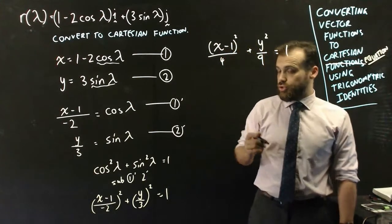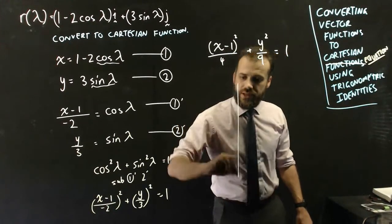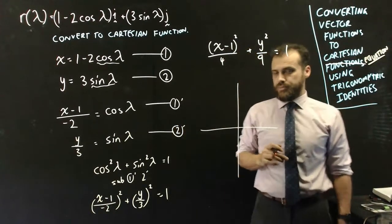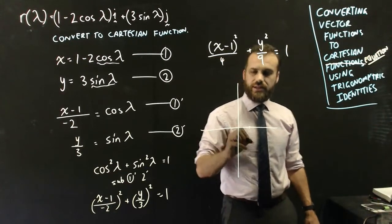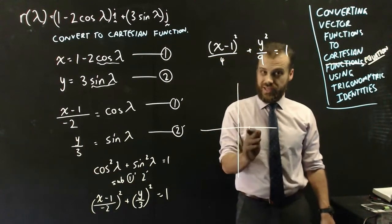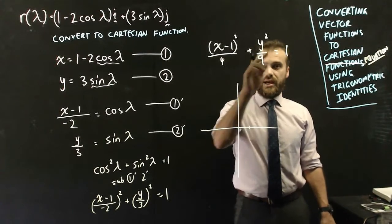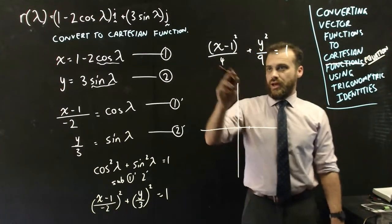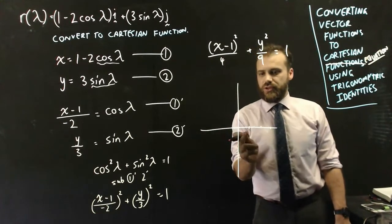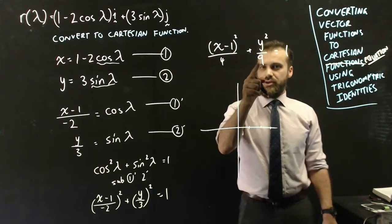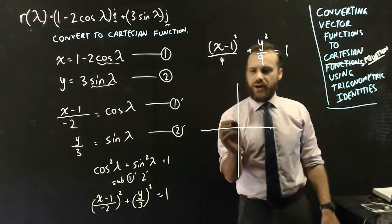So now what you should also know is that this is an ellipse. It's an ellipse that's moved 1 over here, so that's going to be the center. It's moved 1 over, and it hasn't moved up or down. That 4 is going to represent how far across, so it's moving across by the square root of that, and that 9 is going to represent how far up, so 1,